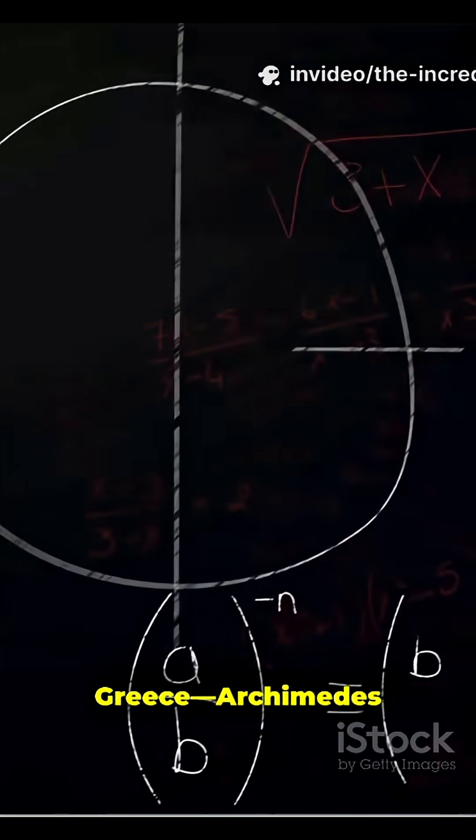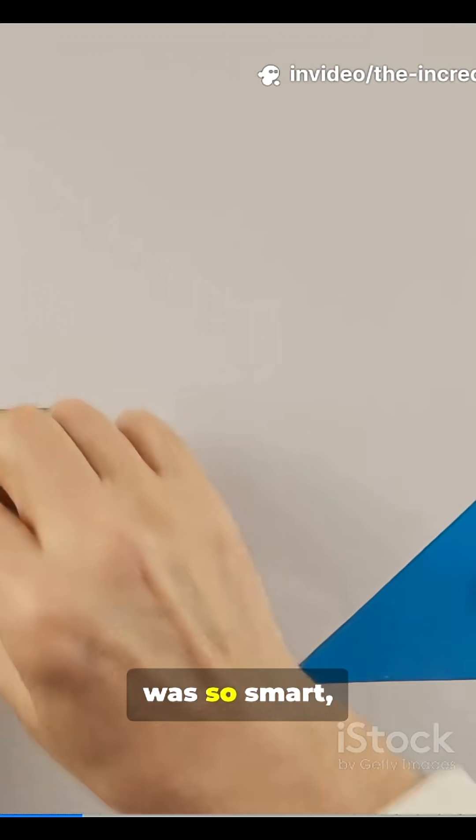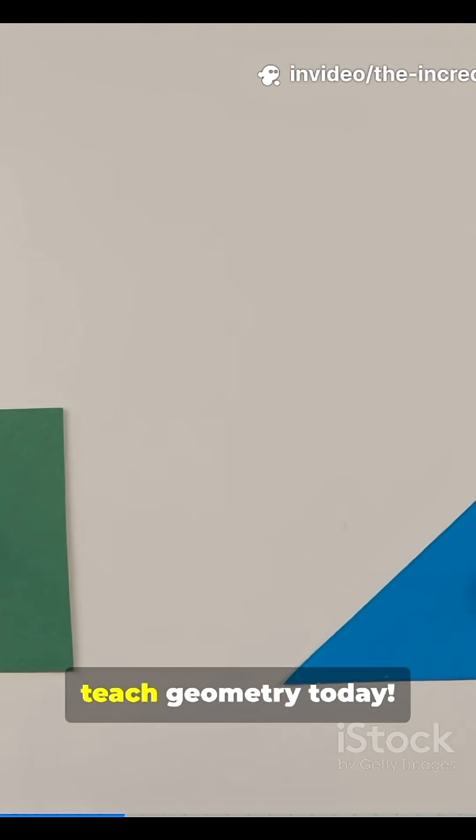Fast forward to ancient Greece. Archimedes got clever with polygons and made pi even more precise. Fun fact, Archimedes' method was so smart, we still use it to teach geometry today.